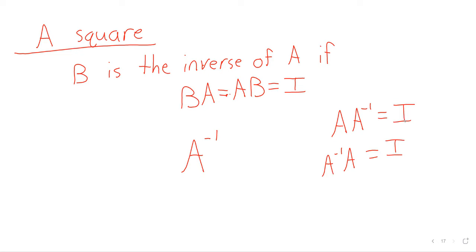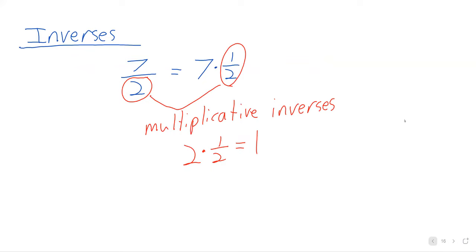And again, the identity is playing the role of one here. So when you had numbers and you were talking about inverses, they multiply together to be one. Here, it doesn't make sense to say that two matrices multiply together to be one. But we have this identity matrix that acts like one.